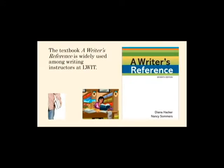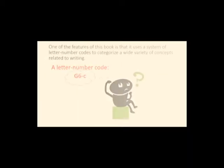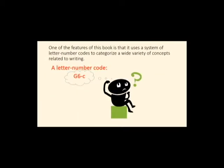You may have heard of the textbook A Writer's Reference. It's one that's widely used among instructors at LWIT. It's used in English 100, English 101, English 102. So one of the features of this book is that it uses a system of letter-number codes to categorize a wide variety of concepts related to writing, so the letter-number code G6C would just be one example.